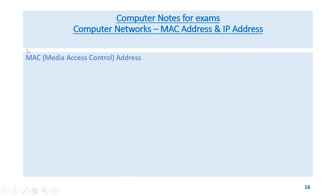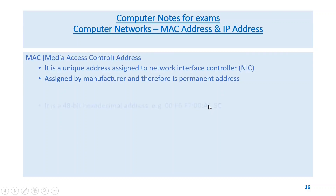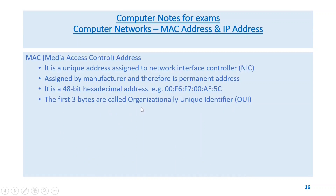Switch connects multiple hosts, uses MAC addresses, and sends data to the port connected to the specific device. MAC — media access control address — is a unique address assigned to the network interface controller (NIC), assigned by the manufacturer and therefore is a permanent address. It is a 48-bit hexadecimal address — for example, 00:F6:F7:00:AE:5C. The first three bytes are called the organizationally unique identifier (OUI).